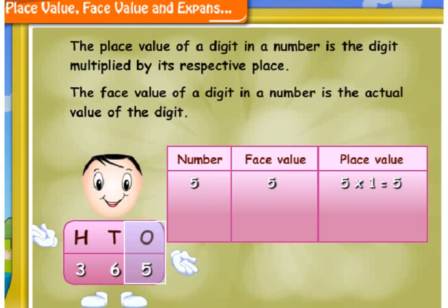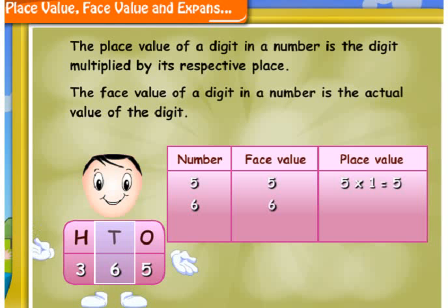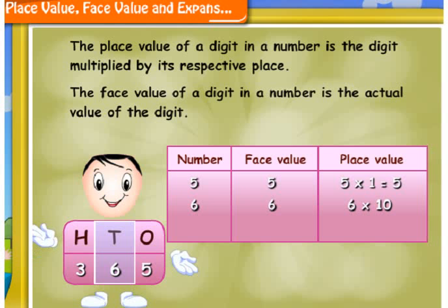The digit at tens place is 6. The face value of 6 is 6 itself. Whereas, the place value is 6 multiplied by 10, that is, 60.